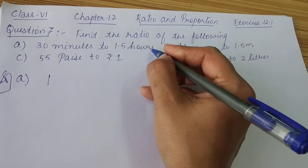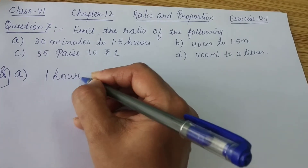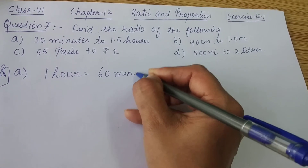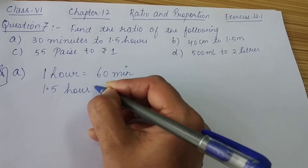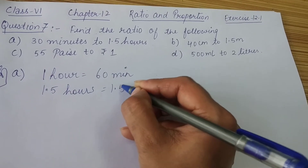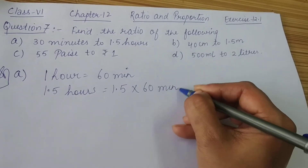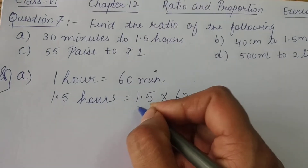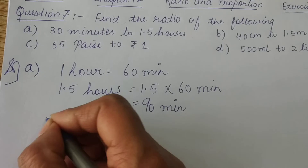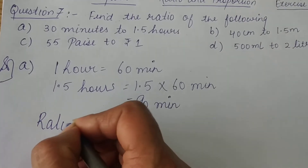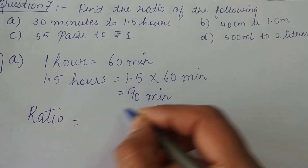For Part A — 30 minutes to 1.5 hours — we will first convert 1.5 hours into minutes. Since 1 hour is equal to 60 minutes, 1.5 hours will be 1.5 multiplied by 60 minutes, which gives us 90 minutes. So now we will find the ratio of 30 minutes to 90 minutes.